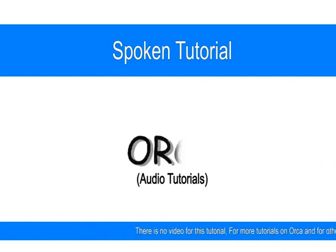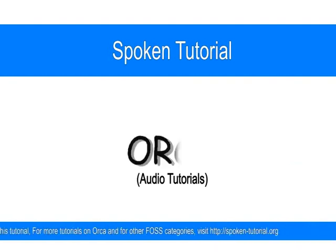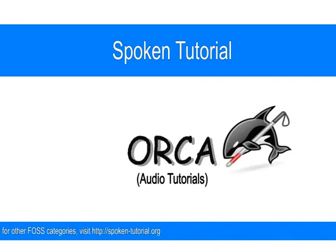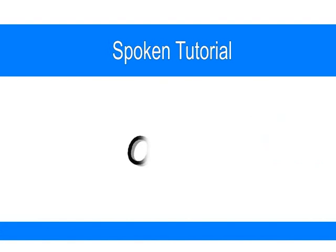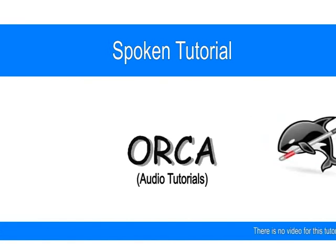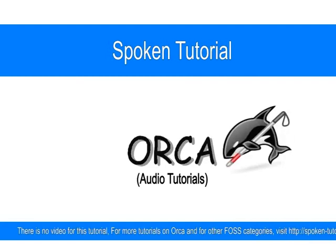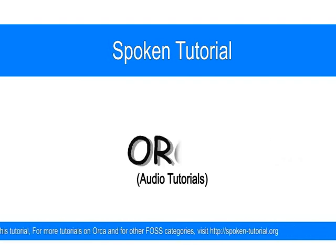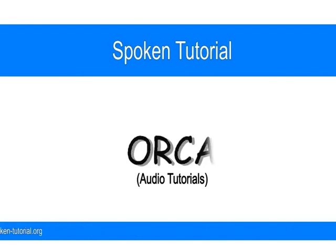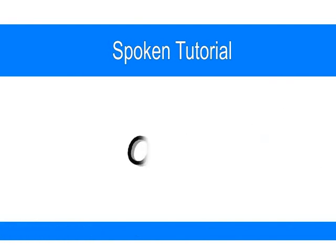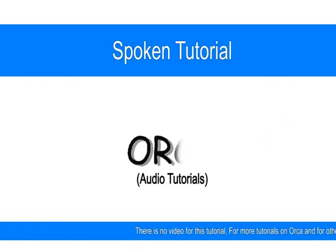We are going to look at some very basic settings here; there are advanced settings which we will leave for future tutorials. Press tab until you hear 'quit Orca without confirmation'. [Orca: Quit Orca without confirmation, checkbox not checked.] If you check this checkbox using the spacebar, it means next time you quit Orca it will not ask for a confirmation. A checkbox can be toggled on or off using the spacebar. Generally it's a good idea to keep this unchecked.